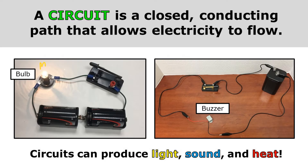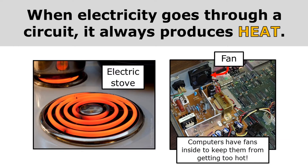On the left, you can see that this bulb is producing light. And on the right, this buzzer is producing a sound. And when electricity goes through a circuit, it always produces heat. That heat can be useful, like with the electric stove — that circuit is producing enough heat to cook with.